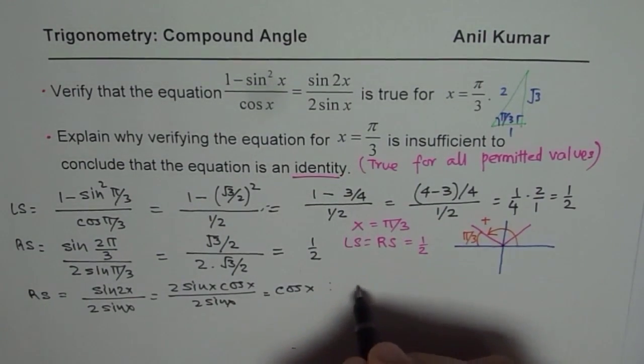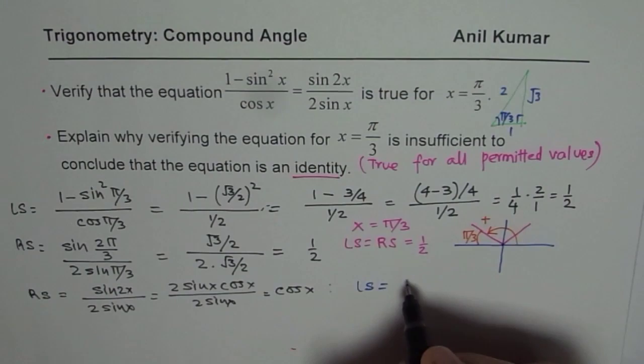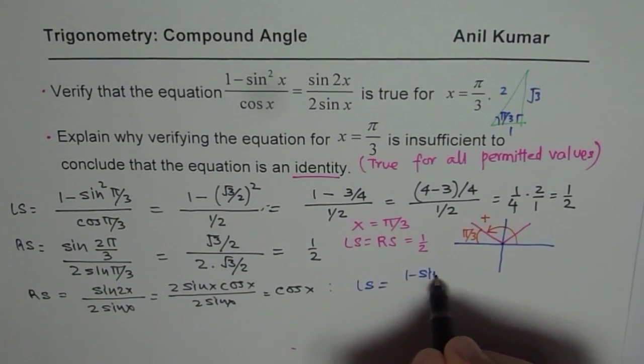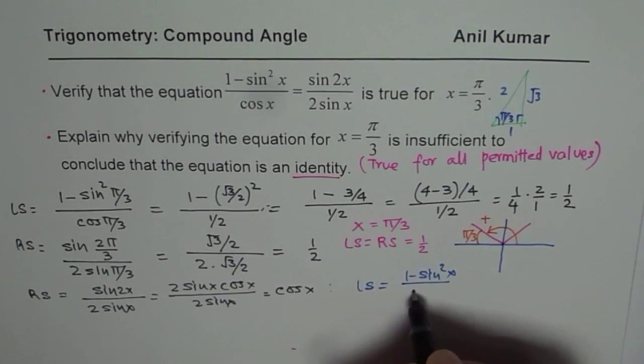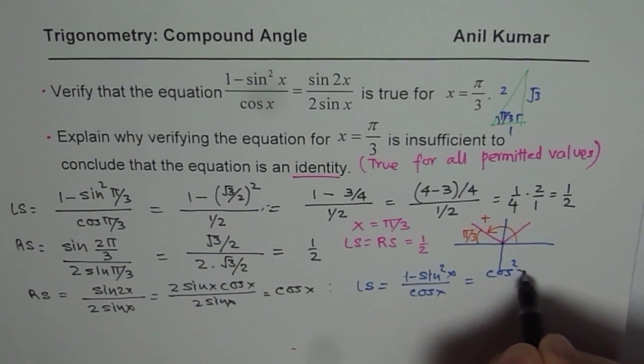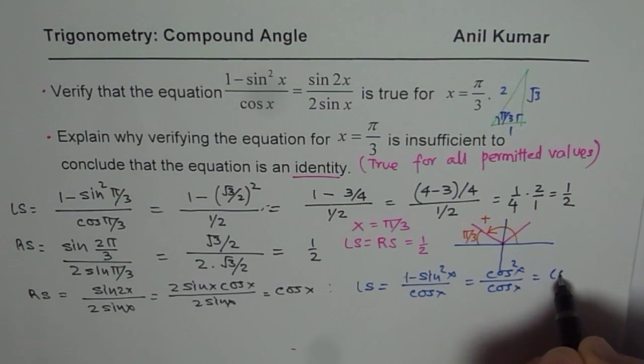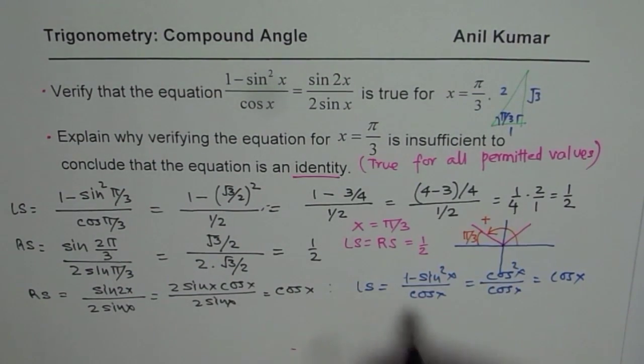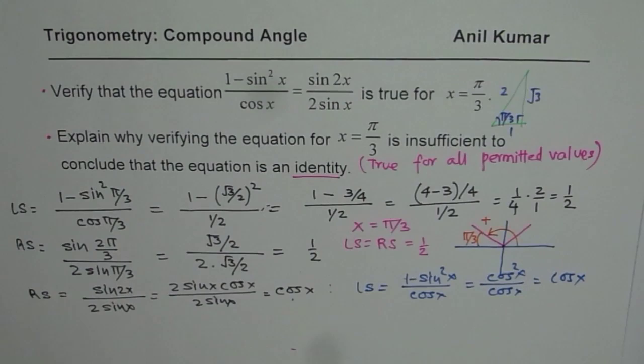So let me just show you what the left side is. Left side is (1 - sin²x)/cos x. Now 1 - sin²x is cos²x, so cos²x/cos x equals cos x.